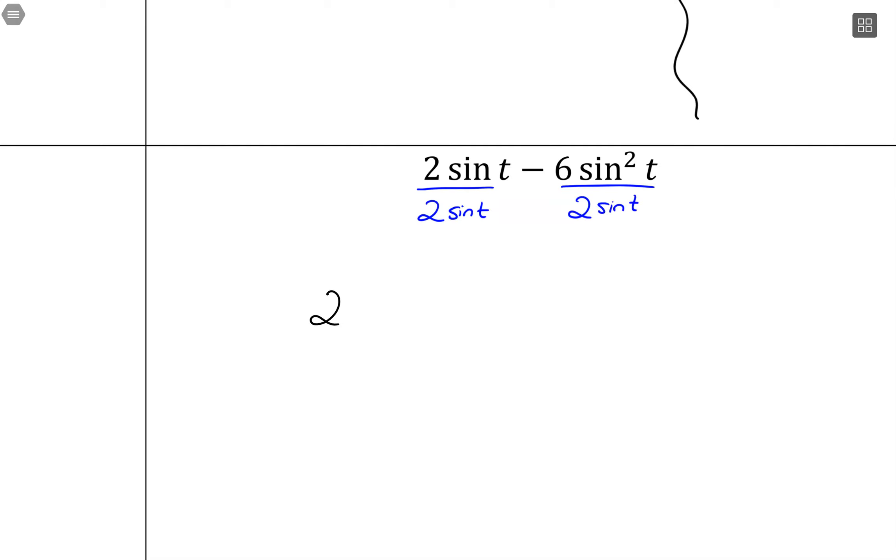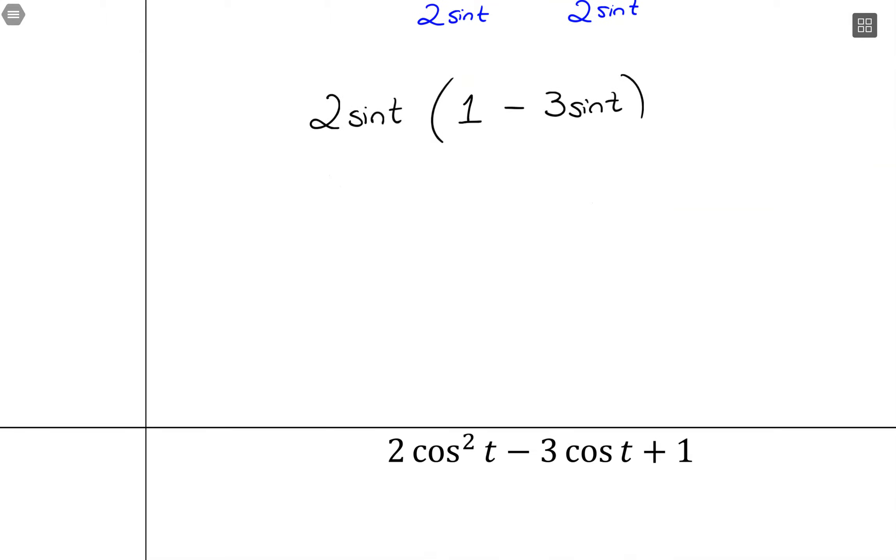So I can factor out a 2 and a sine of t. So 2 sine of t will come out front. And then in parentheses, we have a 1 left over minus 6 divided by 2 is 3. And then we still had a sine left over.